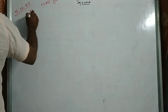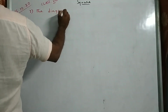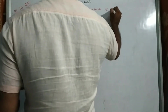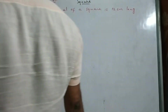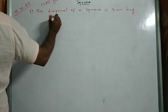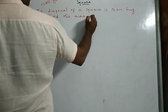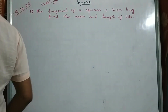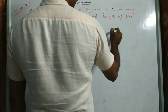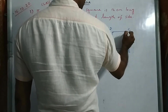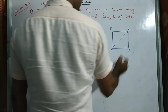Third question: The diagonal of a square is 12 cm. Find the area and the length of one side. You should know the diagonal of a square. What is meant by diagonal? It is the line segment joining two opposite vertices.